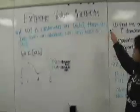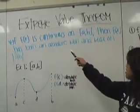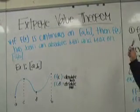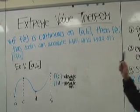The Extreme Value Theorem states that if f(x) is continuous on [a,b], then f(x) has both an absolute minimum and maximum on [a,b].